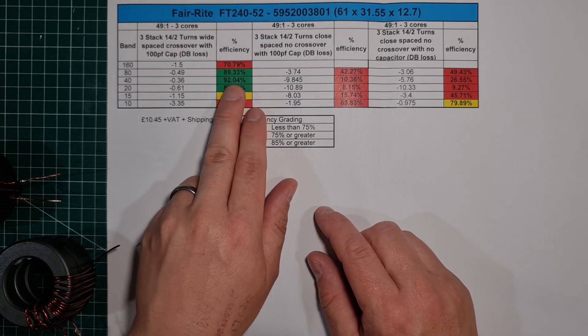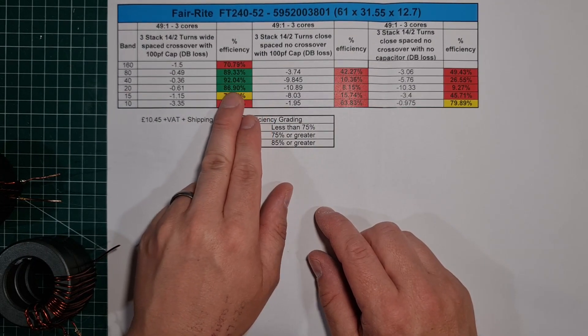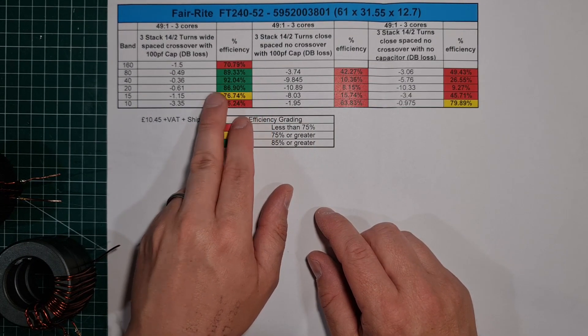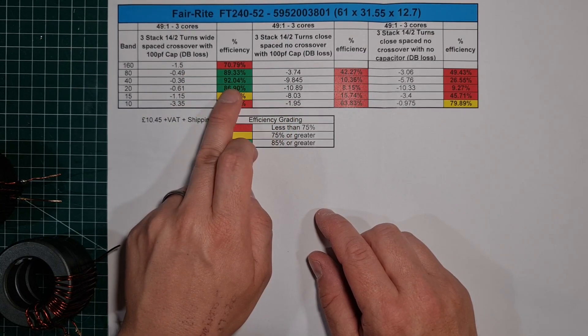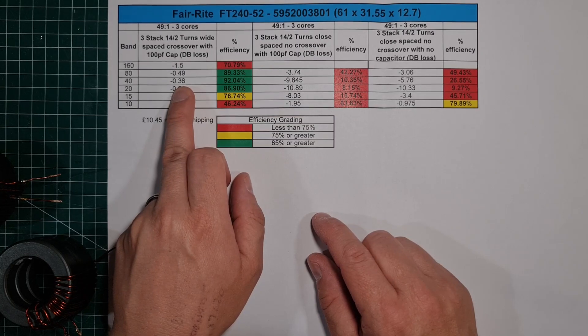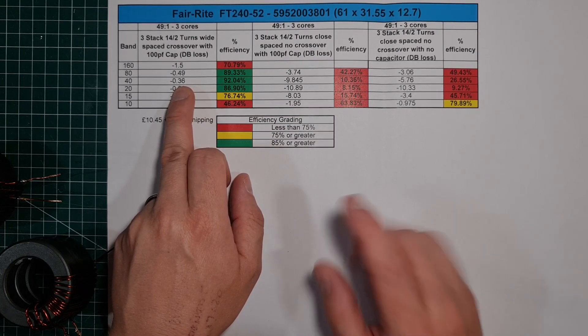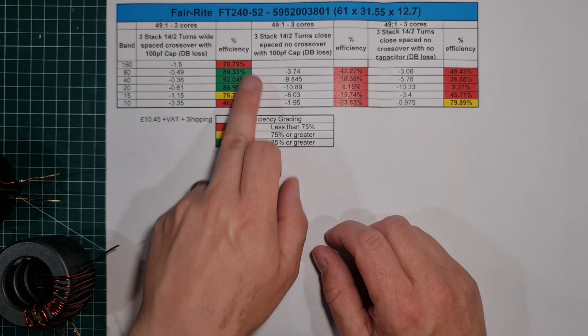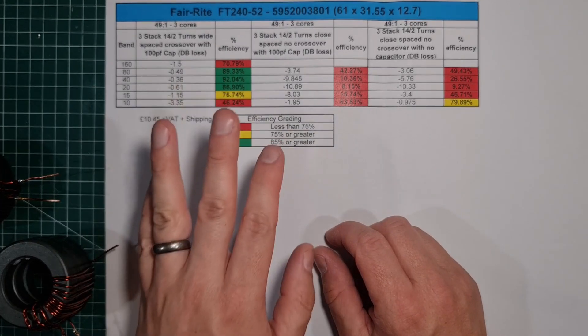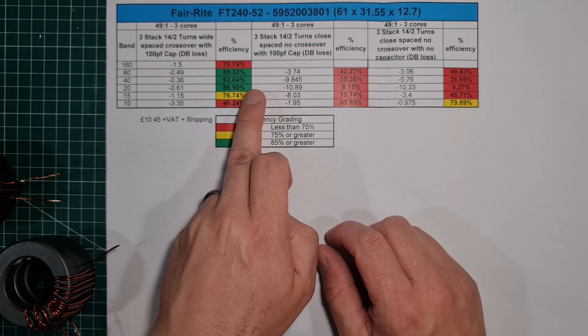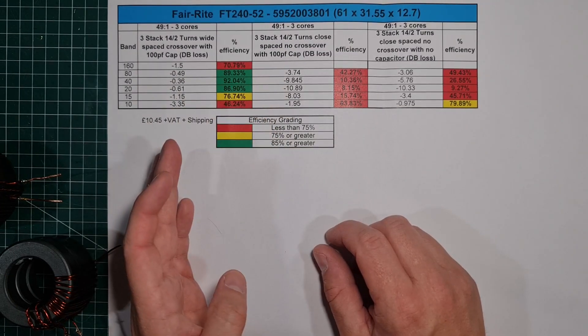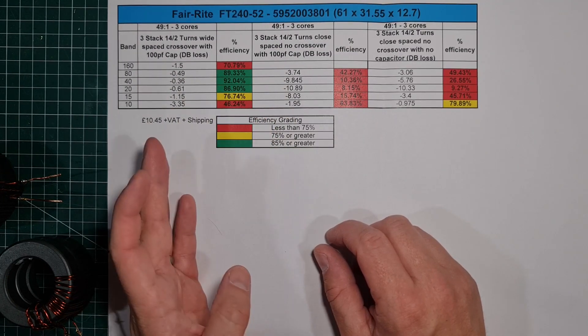When you start to look at 80, 40, and 20, it's actually really good. I would be more than happy with these figures. I mean, to get a 92%, 0.36 on 40, that is excellent. Really excellent. I mean, you could quite happily have this three-stack for 80, 40, and 20, and run your high power. And you'll have quite an efficient antenna.